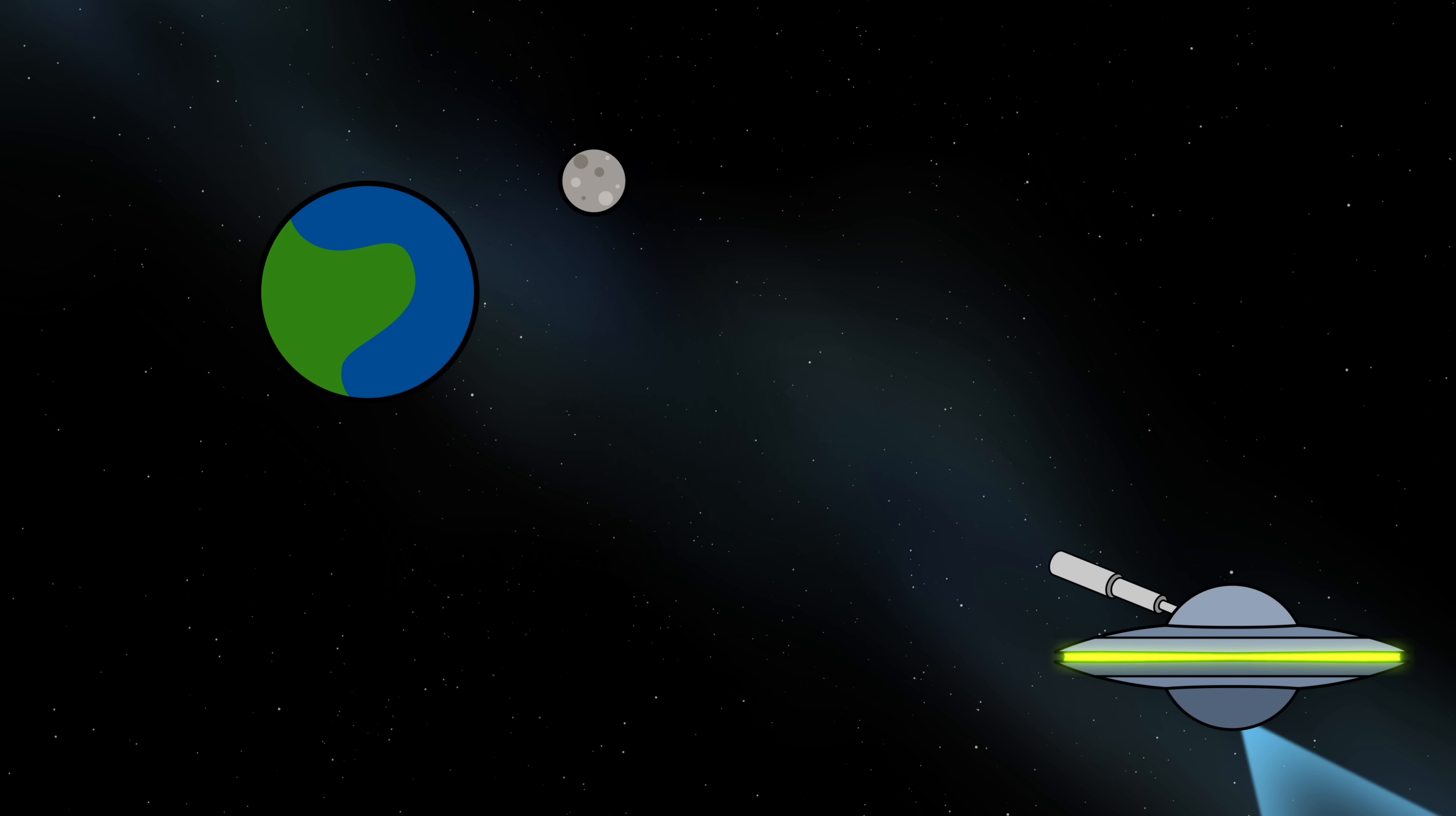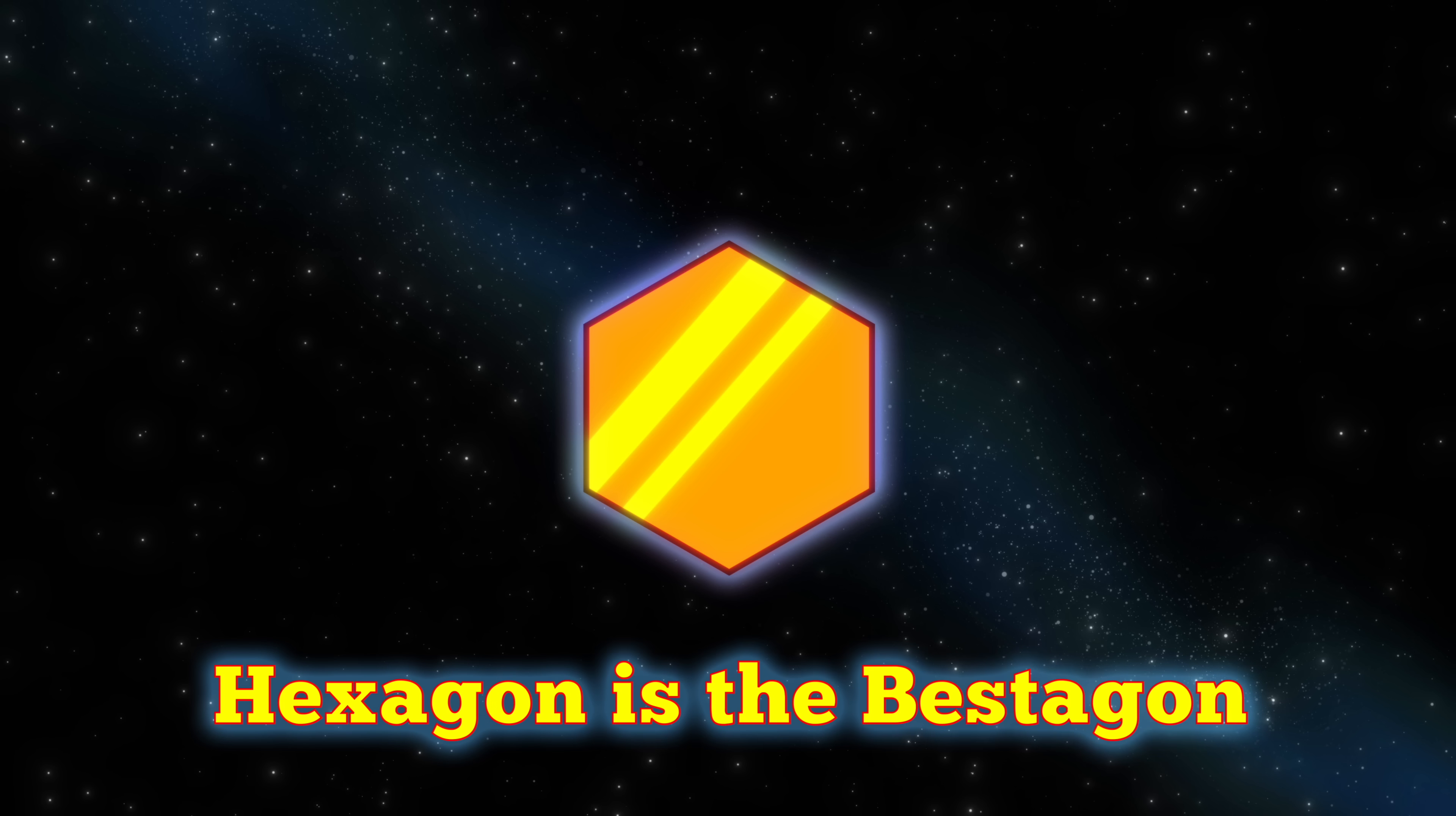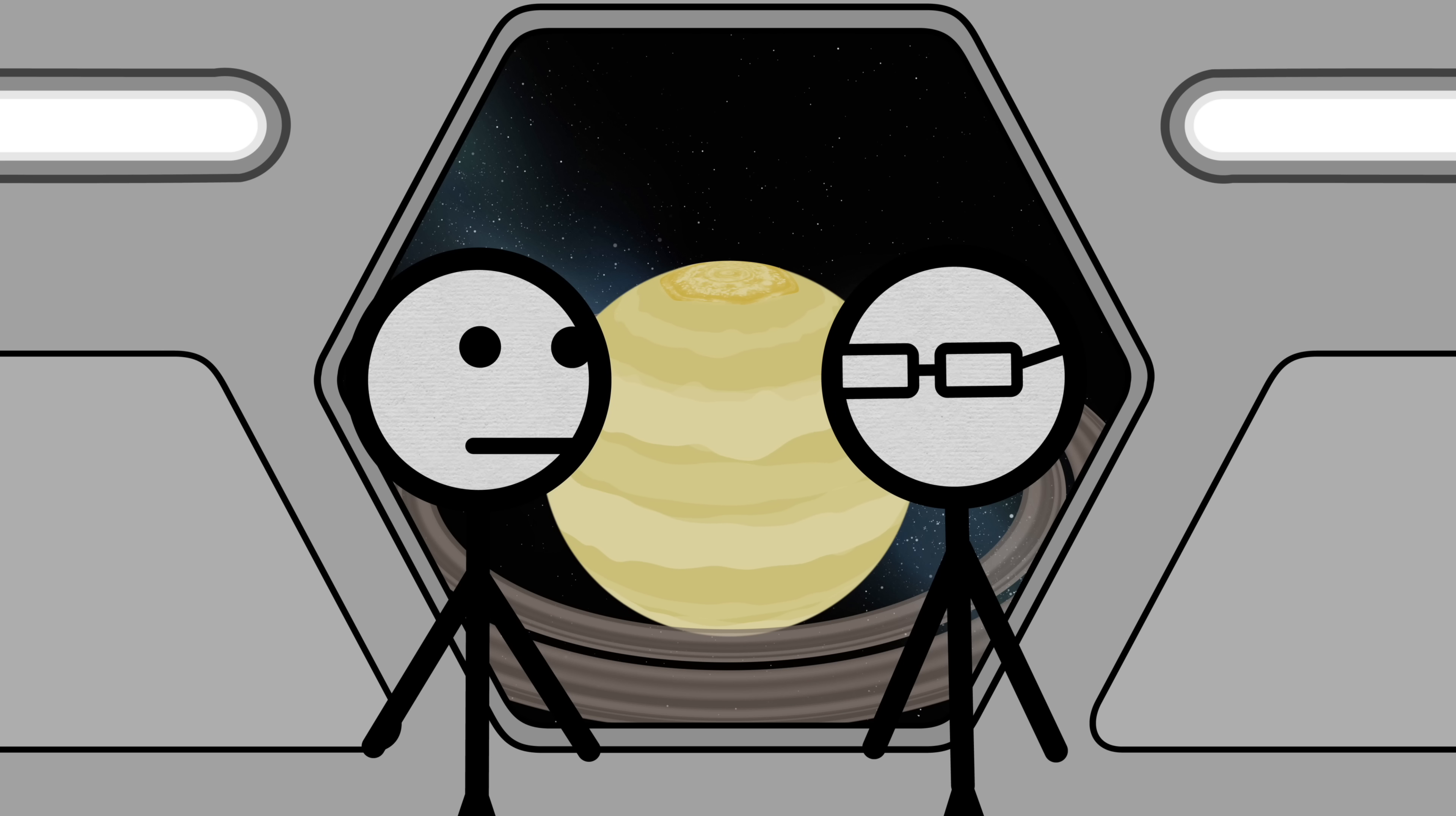After all, what aliens would want to make first contact with the nearby monkeys before they became enlightened to pursue the universal truth? Hexagon is the bestagon. From the largest down to the smallest.